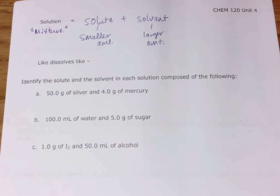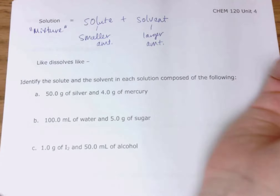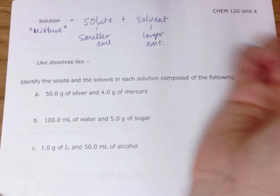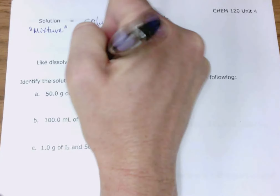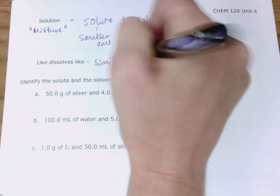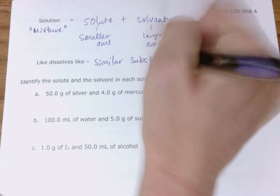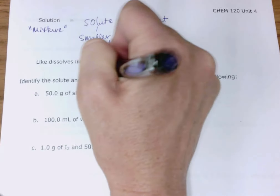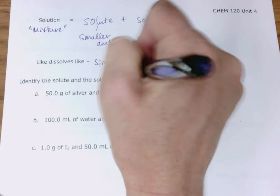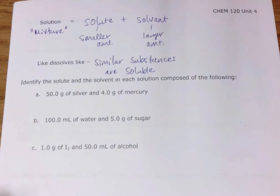With solution chemistry, you'll find that like dissolves like. Similar substances are soluble, meaning they dissolve in each other.